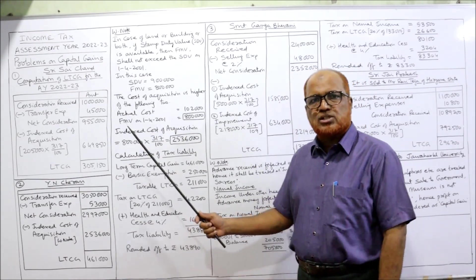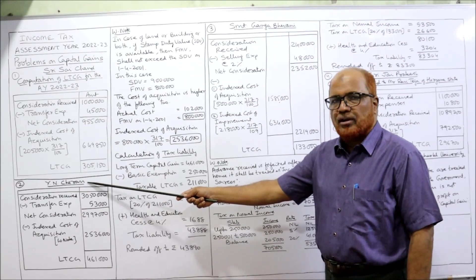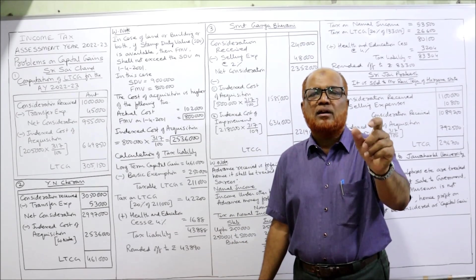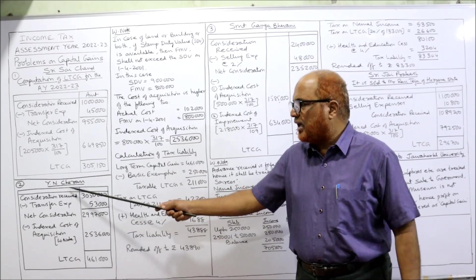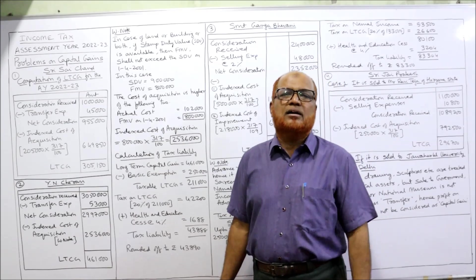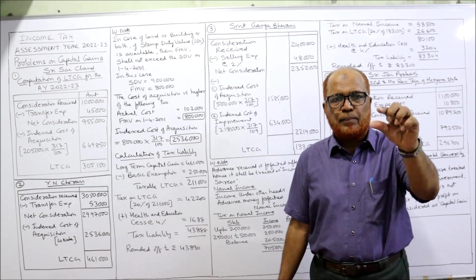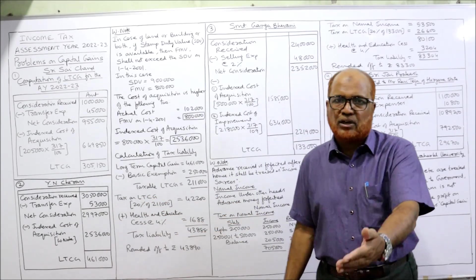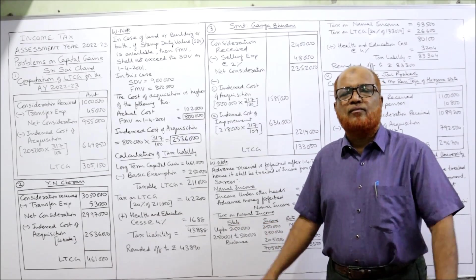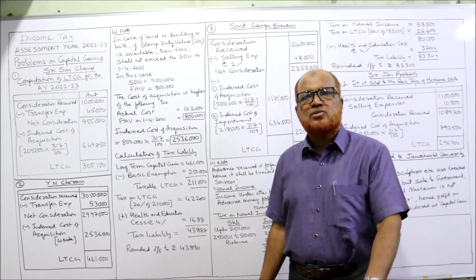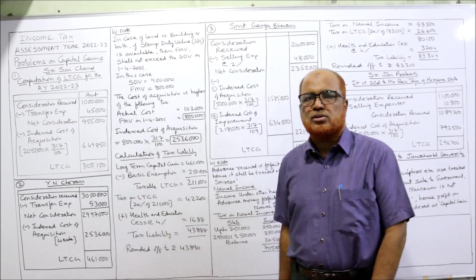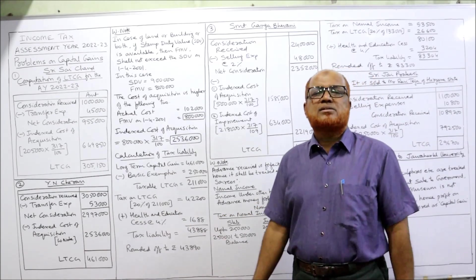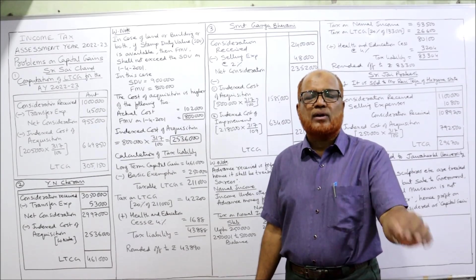So here, for Y.N. Charan — in the examination you should write: 'Computation of Long-Term Capital Gain of Sri Y.N. Charan for the assessment year 22-23.' After writing the complete heading, you start the table. Consideration received: Rs. 30,50,000 — the house was sold for Rs. 30,50,000. Selling expenses (transfer expenses): Rs. 53,000. Deduct to get net consideration: Rs. 29,97,000. From this, we deduct the indexed cost of acquisition.